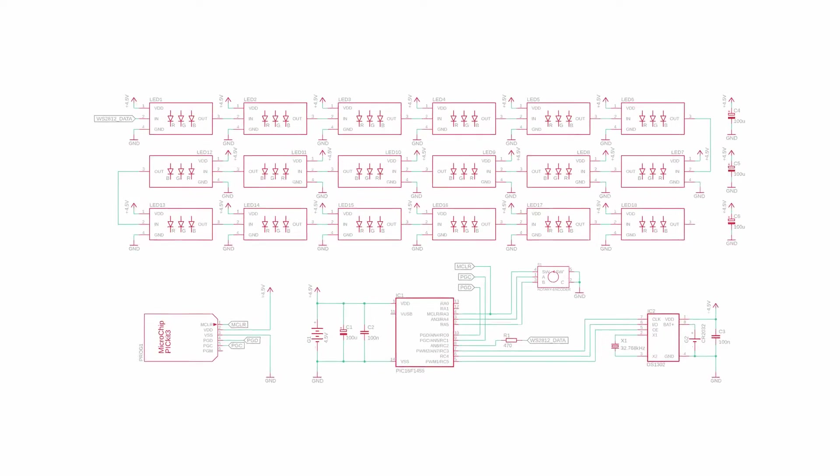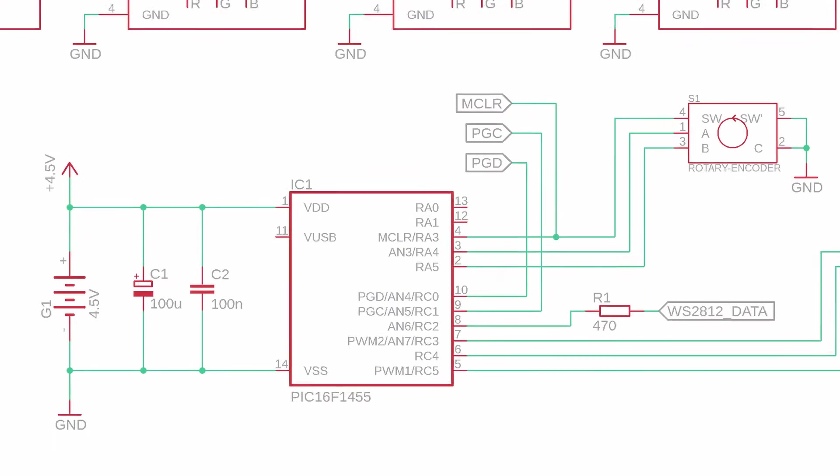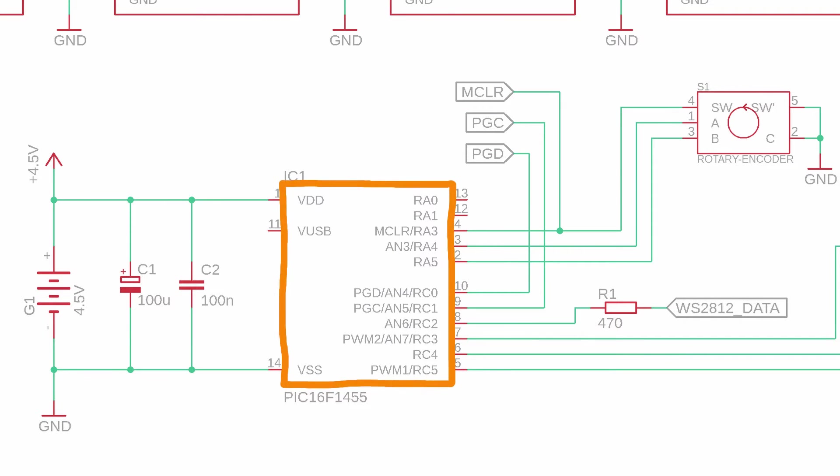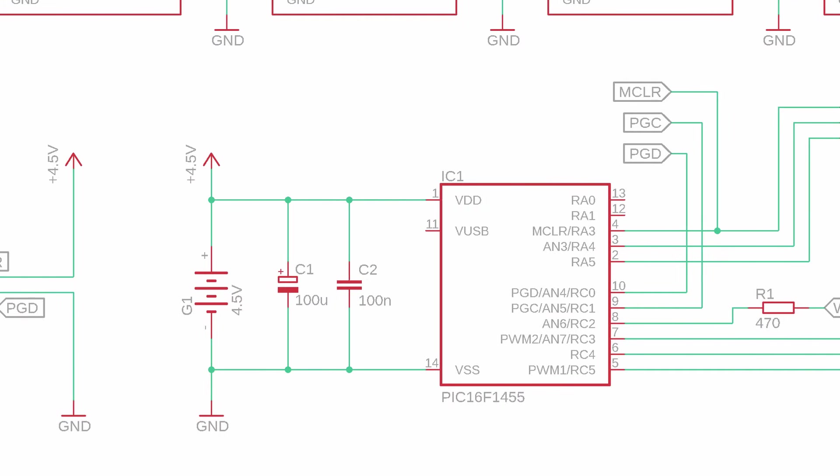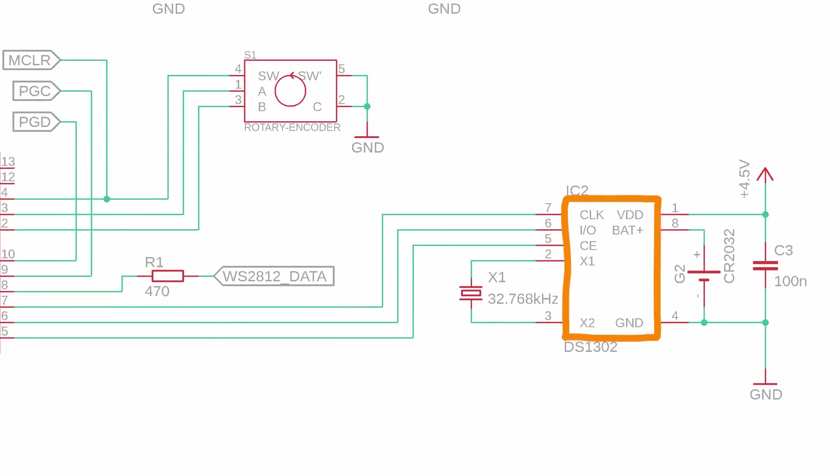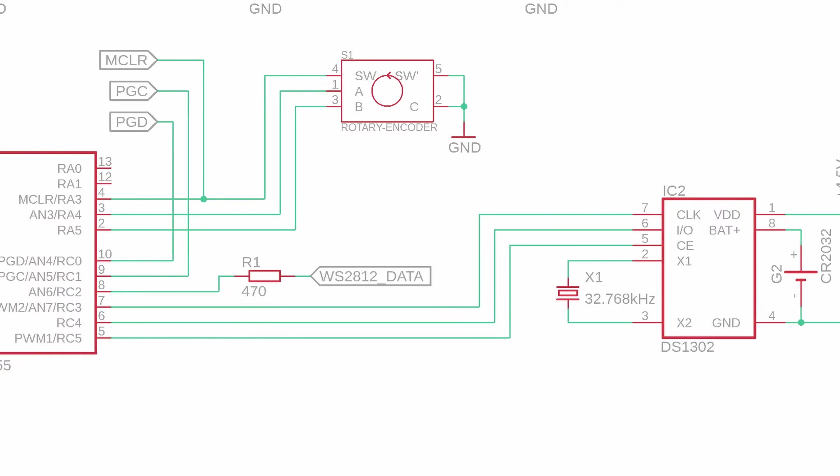Here is the schematic for our new and improved binary clock. This here is the PIC16F1455 microcontroller. Three of its inputs are connected to the rotary encoder. Two of them detect the direction in which it is turned and another one is connected to the internal pushbutton. These capacitors here next to the PIC are there for stability.